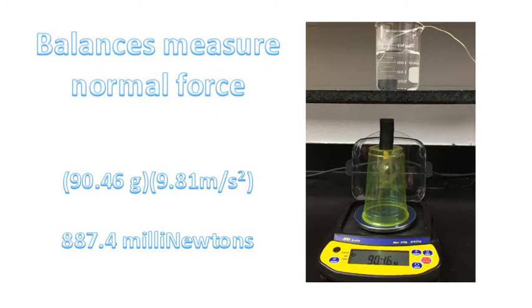Now, balances don't measure the force of gravity. They actually measure the normal force. So, to get the normal force, we take whatever the mass is, as registered by the scale, and we multiply it by the acceleration due to gravity. There's our answer. In significant digits, there's our answer as well.